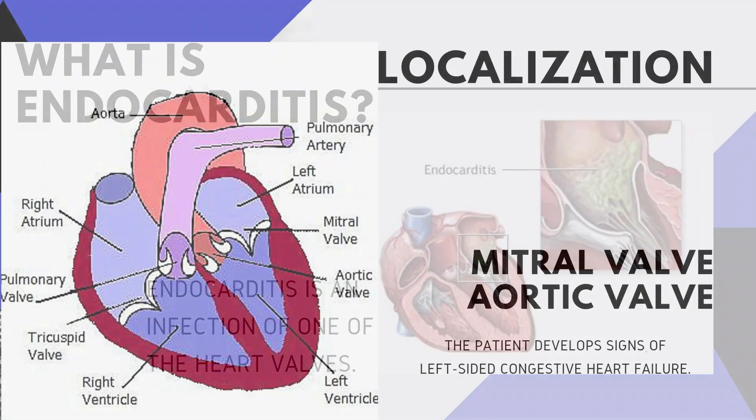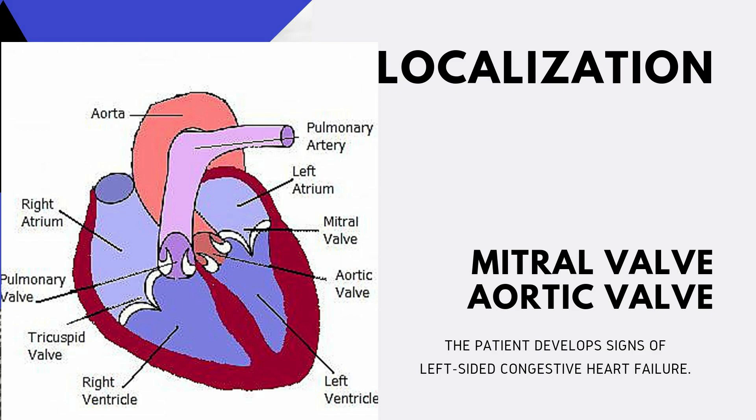In bacterial endocarditis, the two most affected valves are the mitral and aortic valves. The mitral valve lies between the left atrium and the left ventricle. The aortic valve lies between the aorta and the left ventricle.